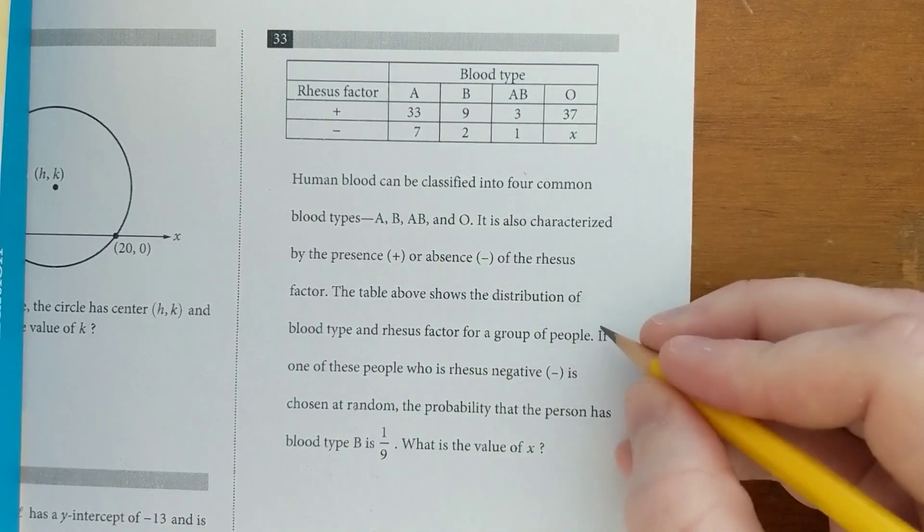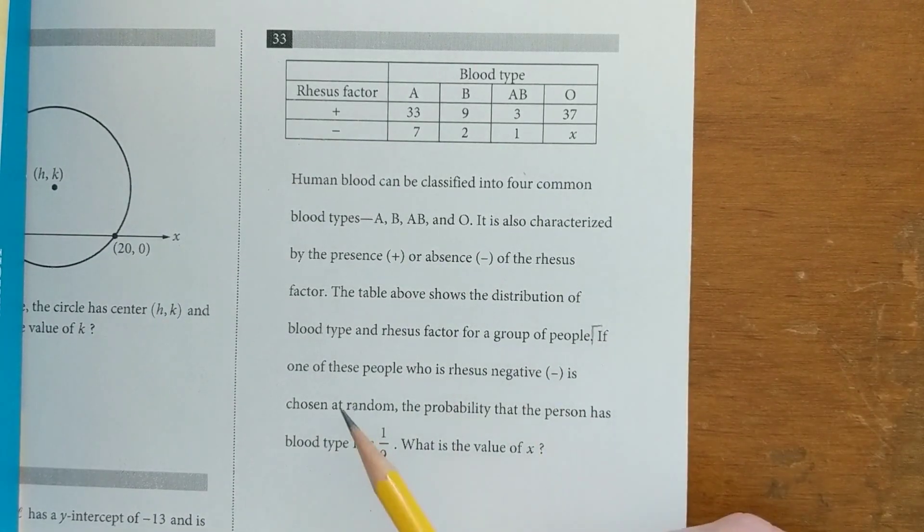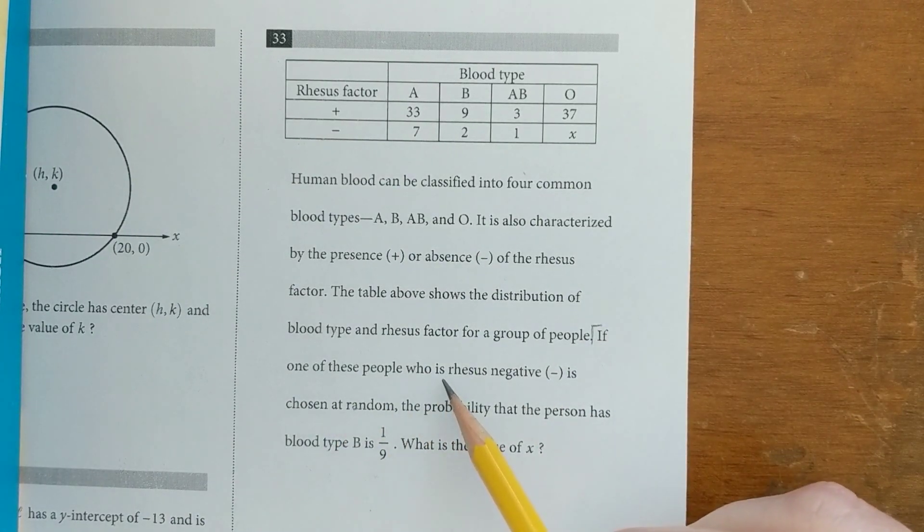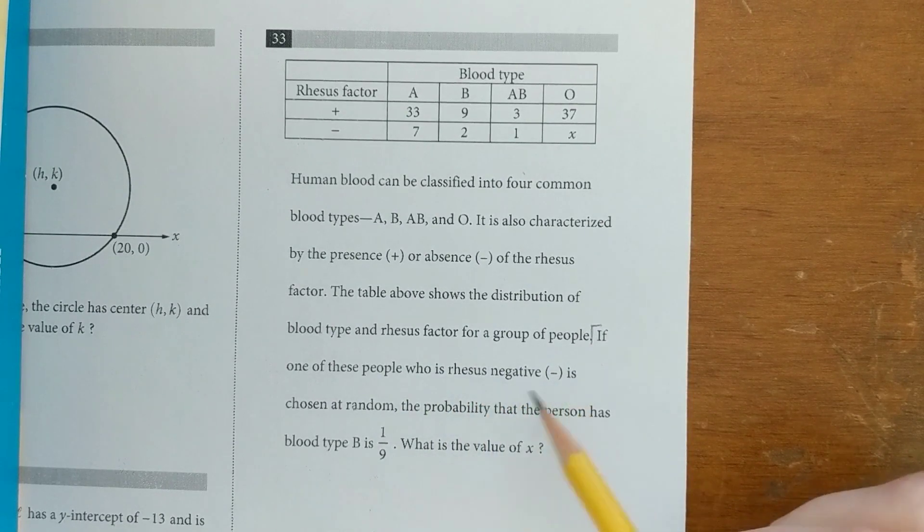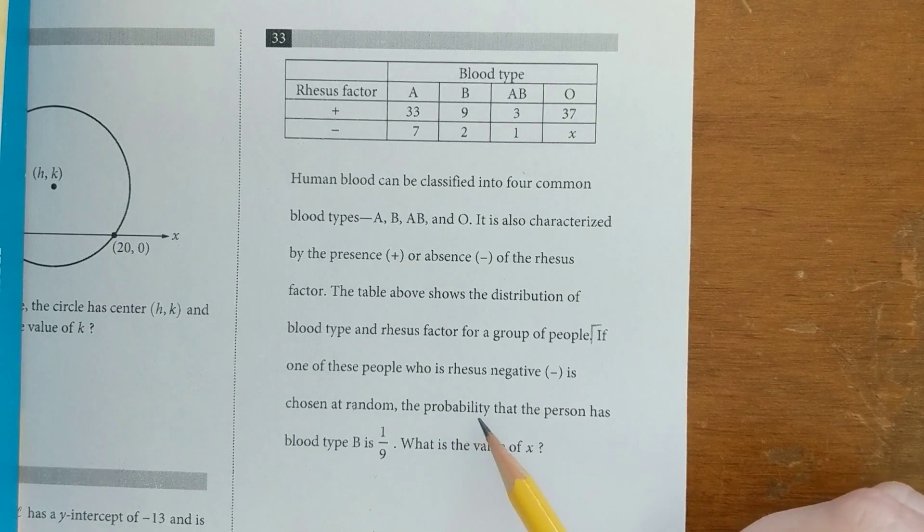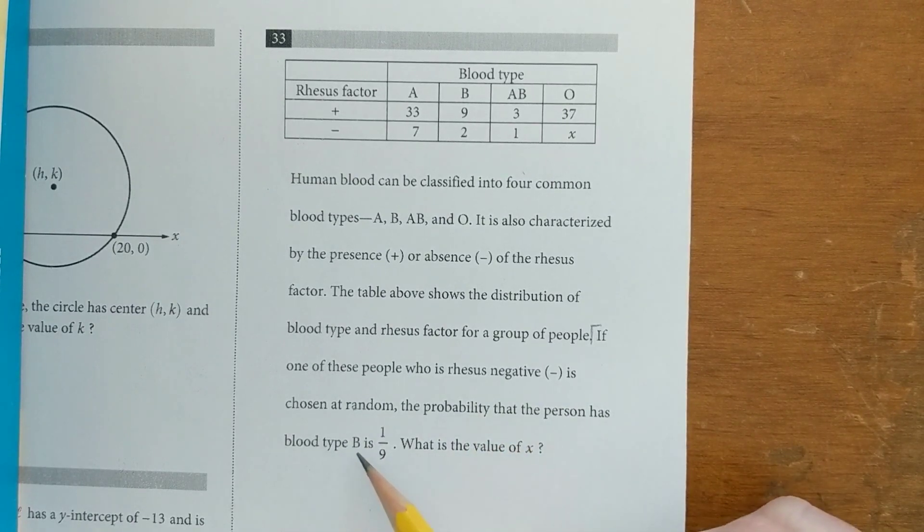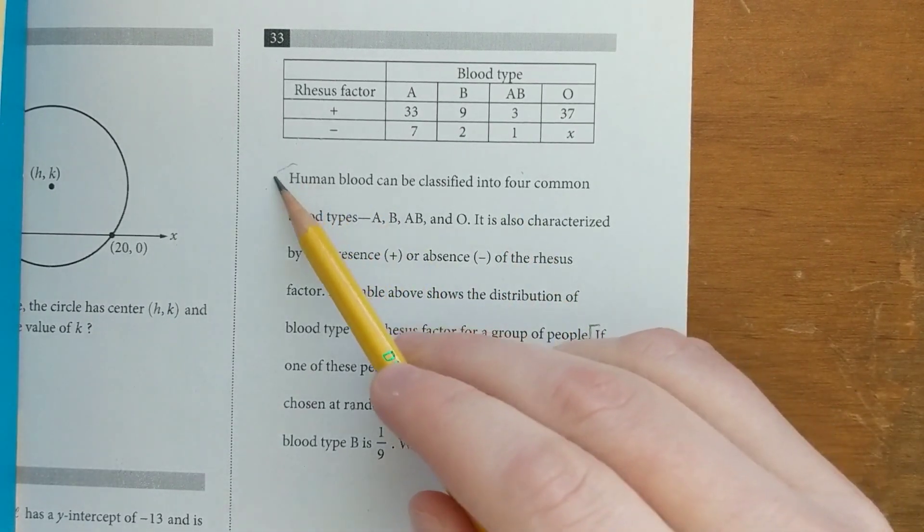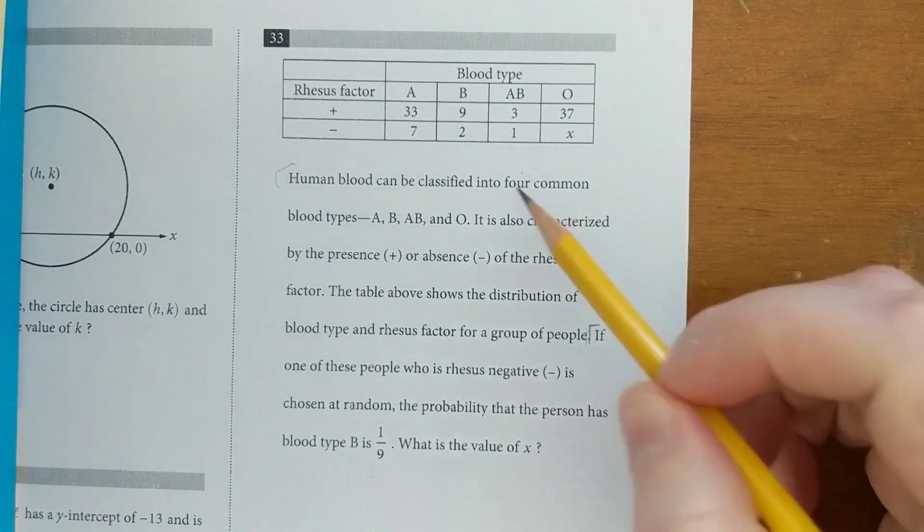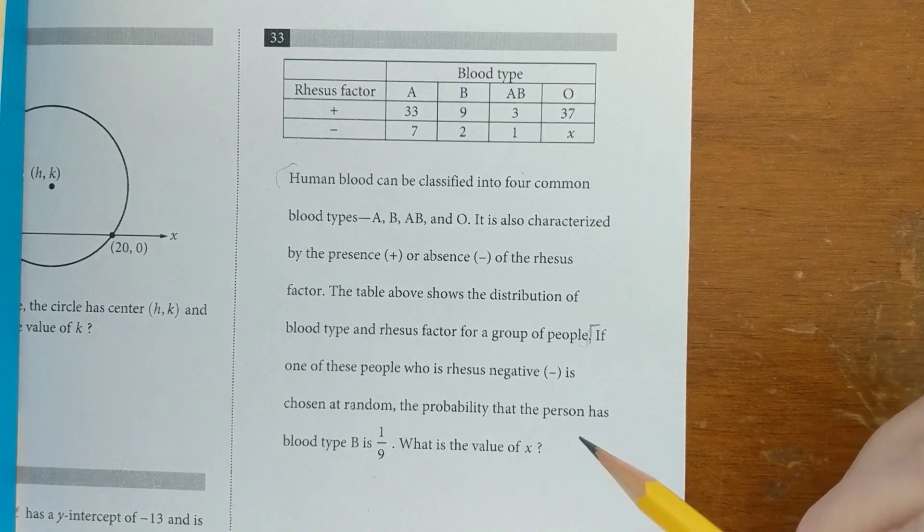So in this case the actual question doesn't really start until here. If one of these people who is Rh negative is chosen at random, the probability that the person has blood type B is 1 over 9. What's the value of X? Okay, so all of this text here is just kind of explaining the table and it doesn't really affect the math that you have to do.